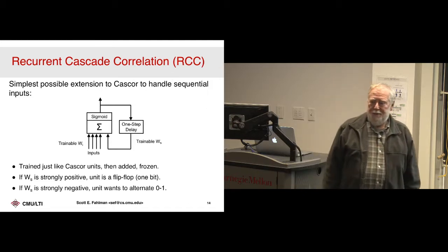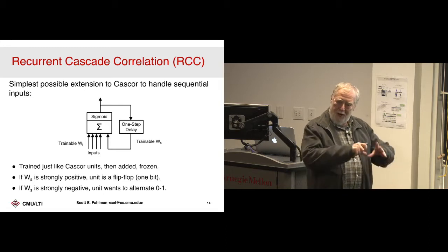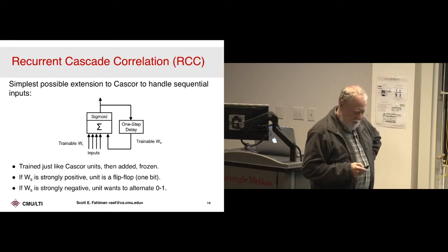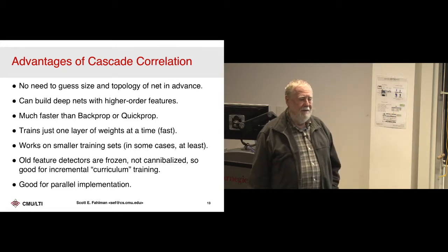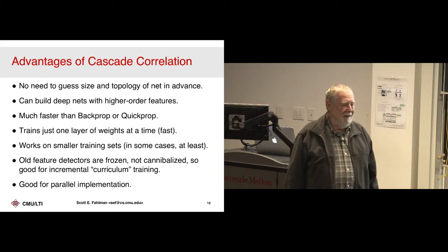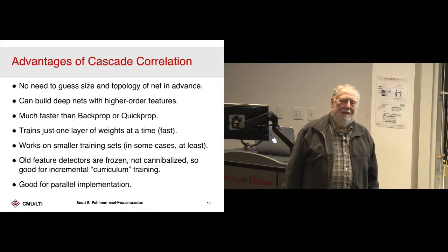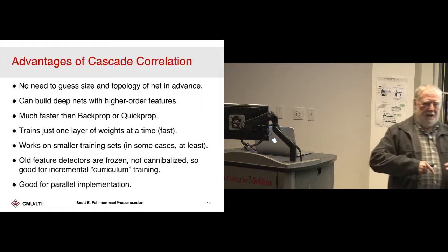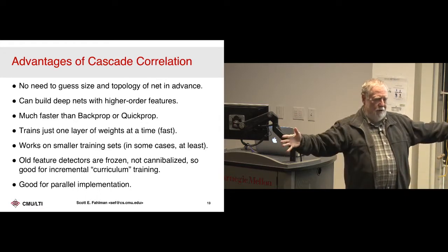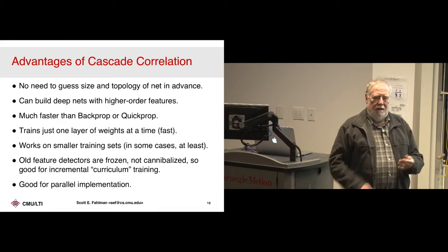Then I said: everybody wants to do time series, not just static input-output. What if we created the simplest possible recurrent version? Before I go on to the recurrent version — as soon as we published this, people started sending us big industrial training sets: predicting insurance defaults, what companies to invest in, measurements of people's feet predicting shoe size. Interestingly, on those industrial datasets that people had tried with three hidden layers of 100 units each with poor results, we'd run it on Cascor and it didn't build any hidden units. It said: hey, this is linearly separable. You didn't know that, did you?